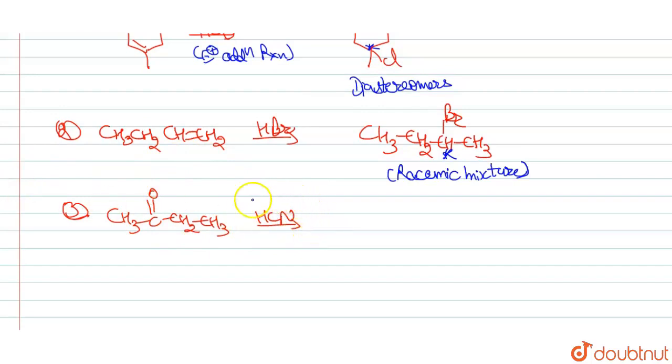HCN is reacted with carbonyl compound. So it will according to the reaction nucleophilic addition, which nucleophilic addition reaction. Here nucleophilic is CN-, CN- attack on carbonyl group, carbonyl carbon of ketone. So what will be the product? Product will be CH3COH, CN, CH2, CH3.